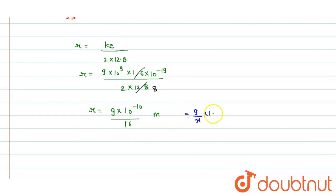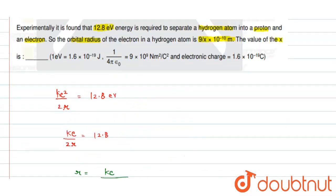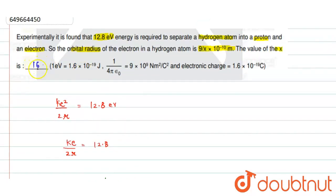And this was equivalent to 9 divided by x times 10 to the power minus 10 meter. Therefore the value of x comes out to be 16, and that is our final answer.